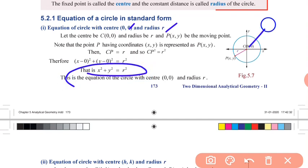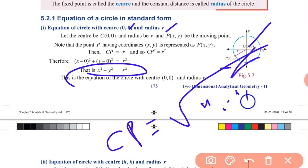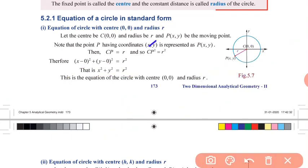That is, center (0,0) is one point and the moving point is P(x,y). The distance formula gives: root of (x₂ minus x₁) whole squared plus (y₂ minus y₁) whole squared. Squaring both sides, CP squared equals R squared, so x squared plus y squared equals R squared.